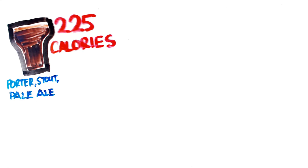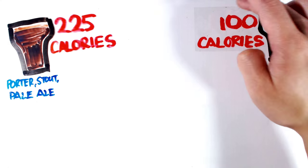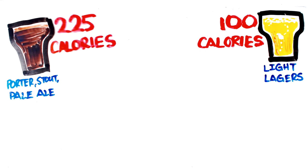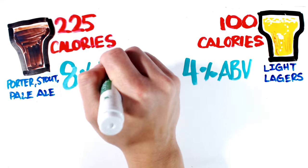Your best bet for diet friendly beers are the lighter variety of lagers, but with lowered calorie comes lowered alcohol content as well. The same light lager, where at 100 calories, only has roughly 4% alcohol by volume. A 225 calorie pale ale on the other hand, can be as high as 8%.